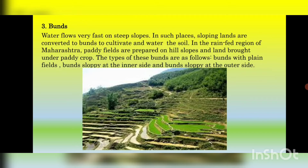The types of Buns are as follows: one is plain Buns and the other is slopey Buns. The slopey Buns have two types: Buns slopey at the inner side and Buns slopey at the outer side.